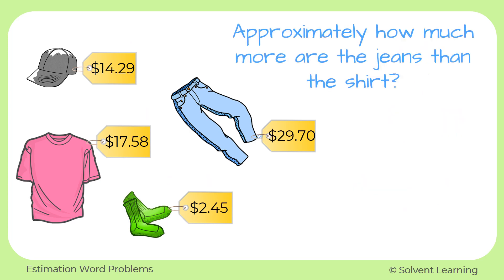Approximately how much more are the jeans than the shirt? Once again, we see a keyword that tells us we can estimate our answer — we see 'approximately.' This time we're not being asked to find the total. They're asking how much more are the jeans than the shirt, so 'how much more' tells us we want to find the difference between the cost of the jeans and the shirt.